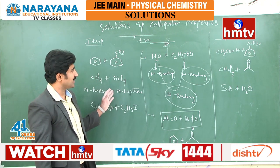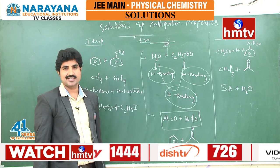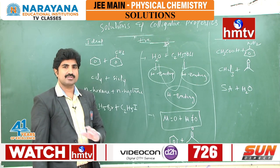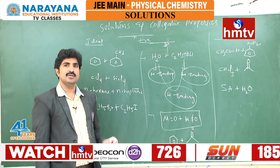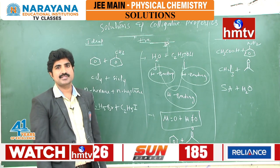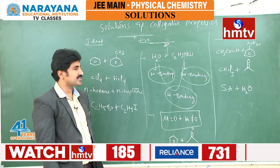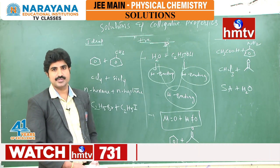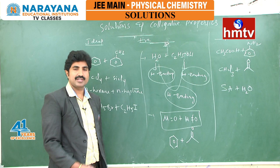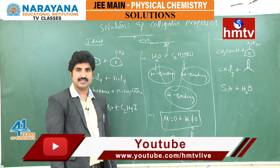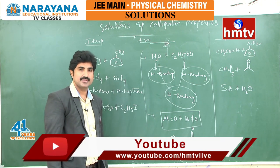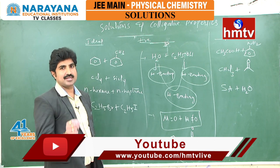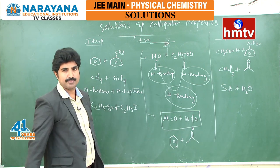So we can understand these examples easily based on our chemistry concepts. We have now completed the characteristic properties of ideal solutions, non-ideal positive and negative deviation solutions. Now we will see different graphical representations for these ideal and non-ideal solutions and corresponding fractional distillations and azeotrope formations.